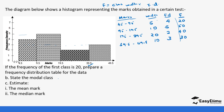To find the modal class, it is the one with the highest frequency. The highest frequency is 50, which belongs to the class interval 9.5 to 19.5 — or in original terms, 10 to 19. Either way it gives the same answer.